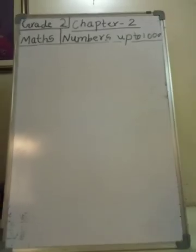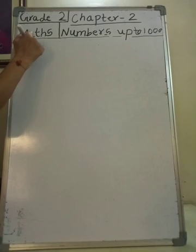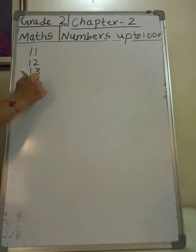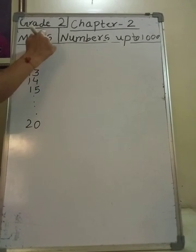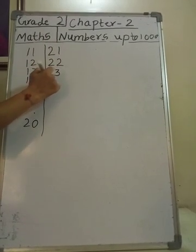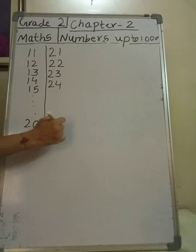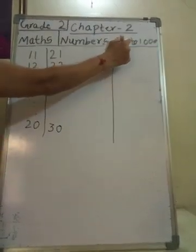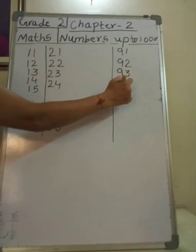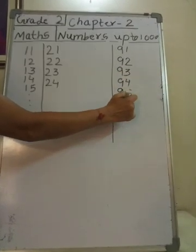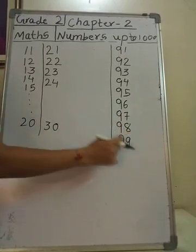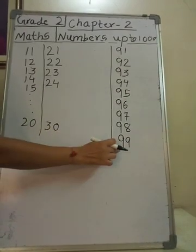We have learned about two-digit numbers in Grade 1, like 11, 12, 13, 14, 15 up to 20. Then the next line: 21, 22, 23, 24 up to 30. And the last line is 91, 92, 93, 94, 95, 96, 97, 98, 99. All these are two-digit numbers up to 99.